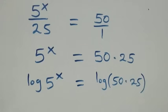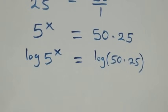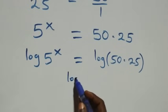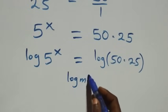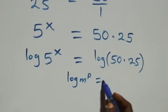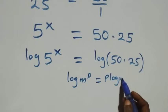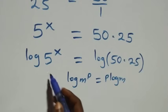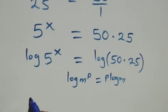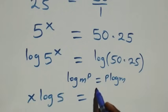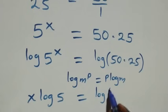From here, we apply the power rule of logarithms: when we have log m raised to power p, this is the same thing as p times log m. That is, here we have x times log 5.